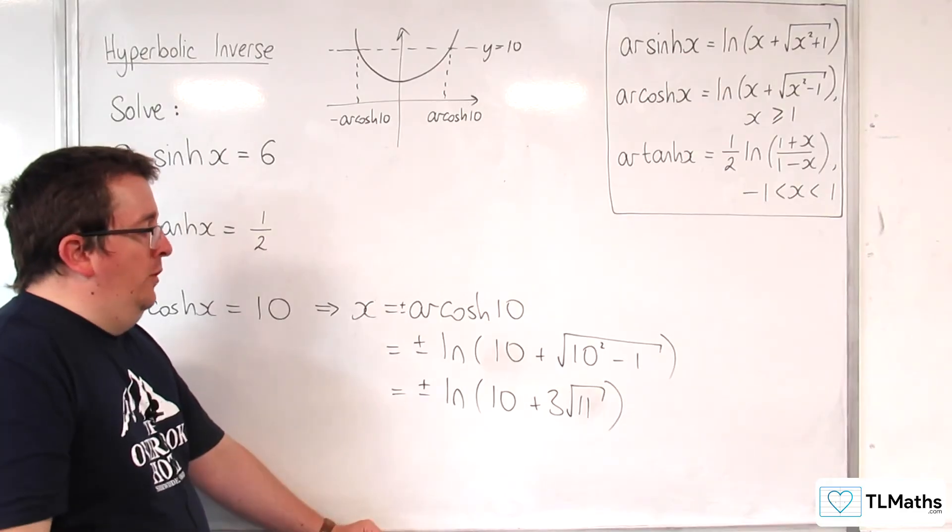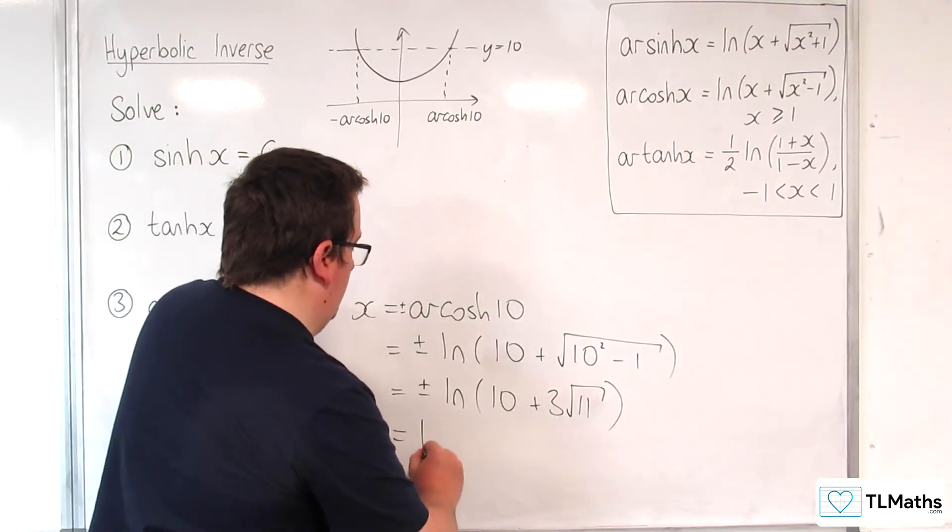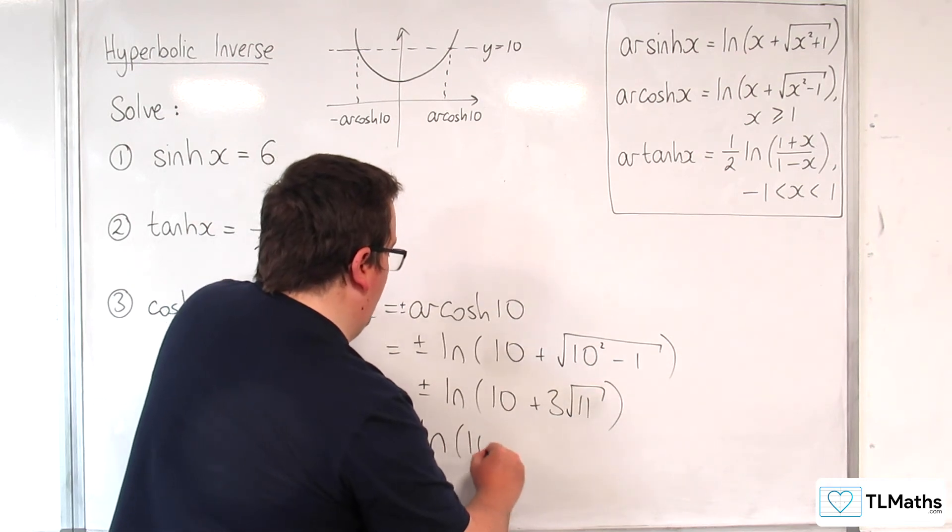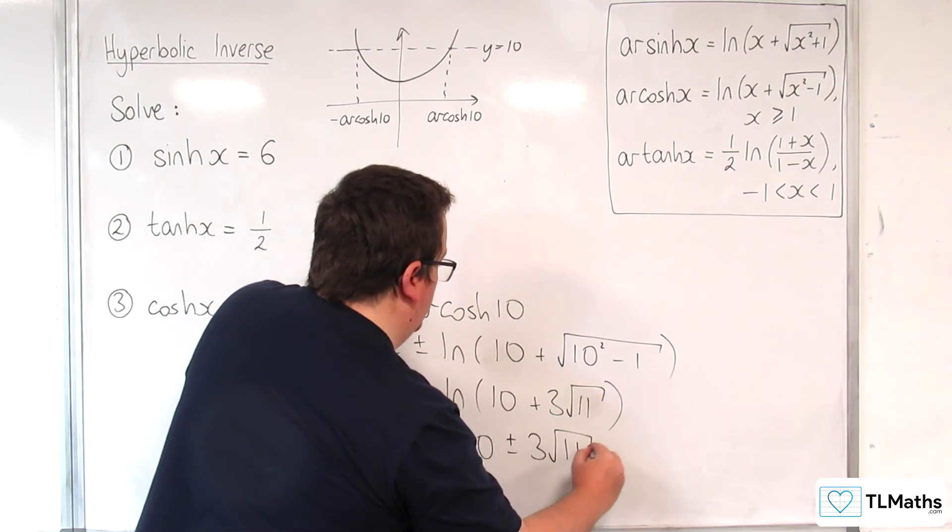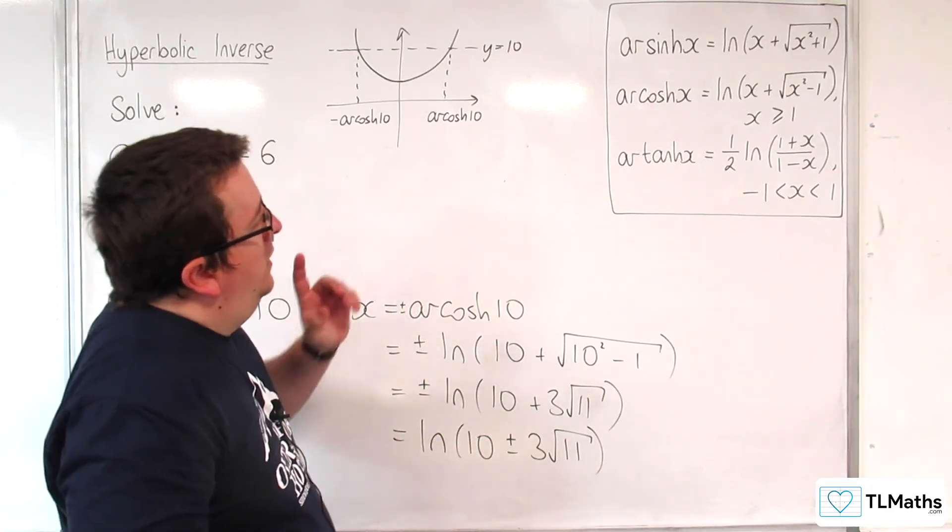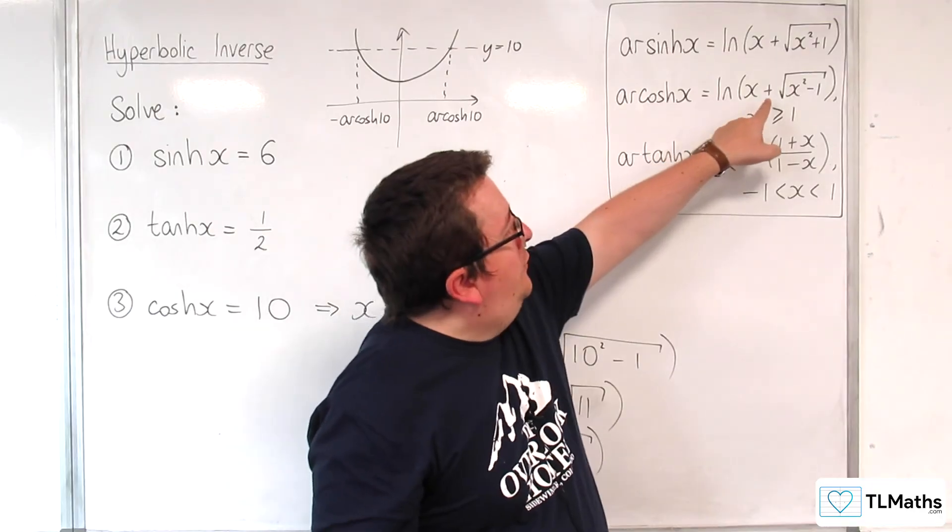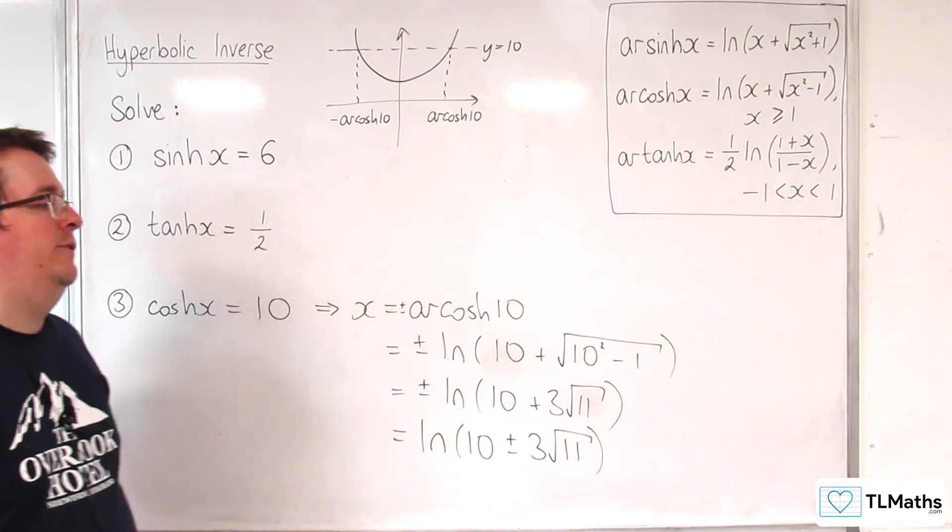And, if you've watched all the videos up to this point, you'll note that actually we could write this as the natural log of 10 plus or minus 3 root 11. Because we saw that log of x plus or minus the square root of x squared minus 1 are actually the positive and negative of one another.